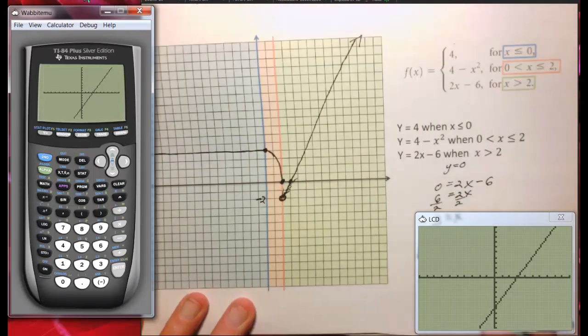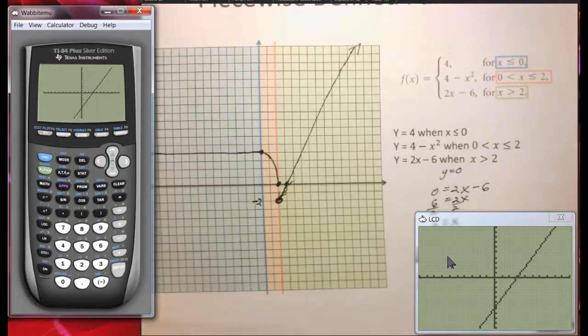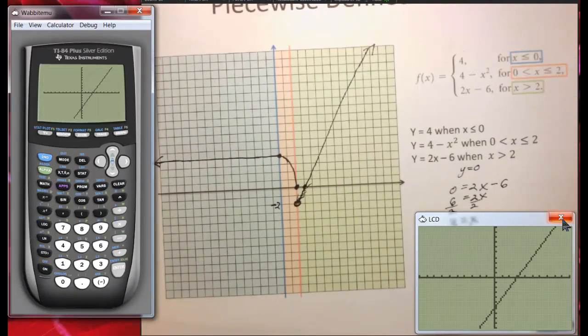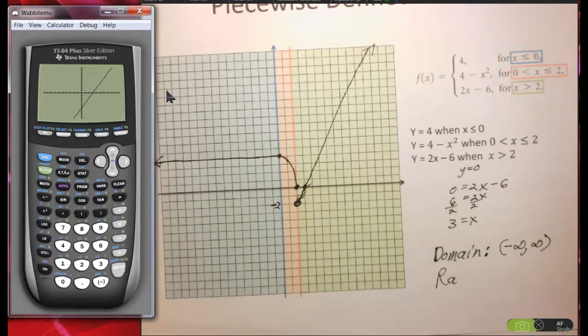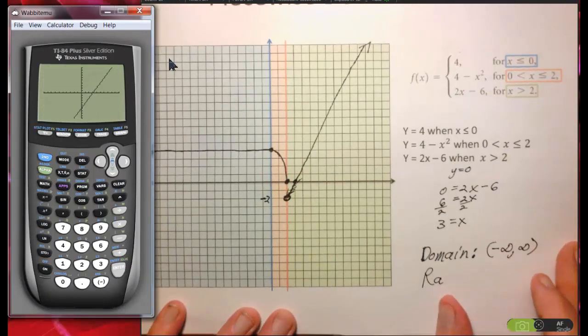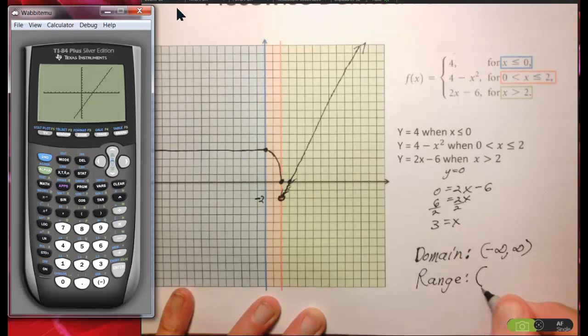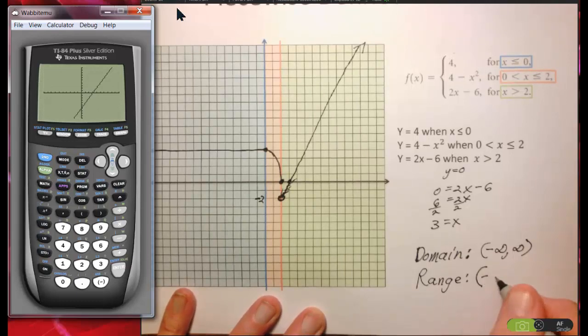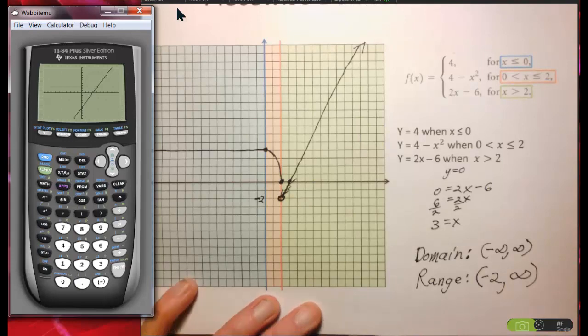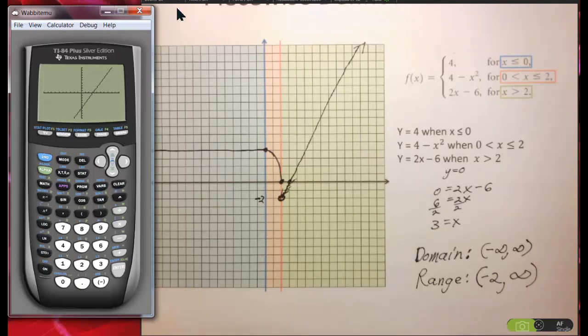Our range is going to start at y equals negative 2, but not equal y equals negative 2, and go forever up. So that's our domain and our range.